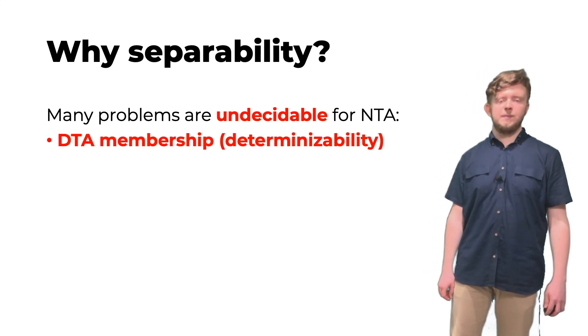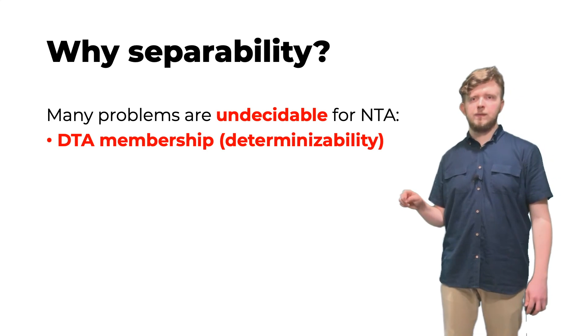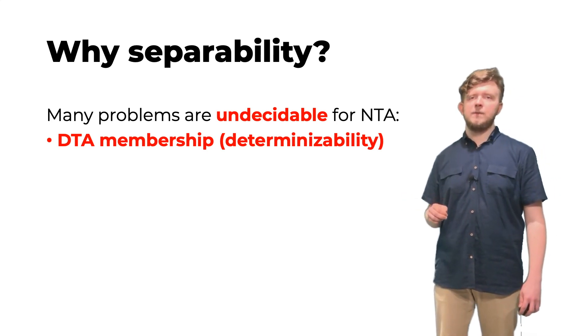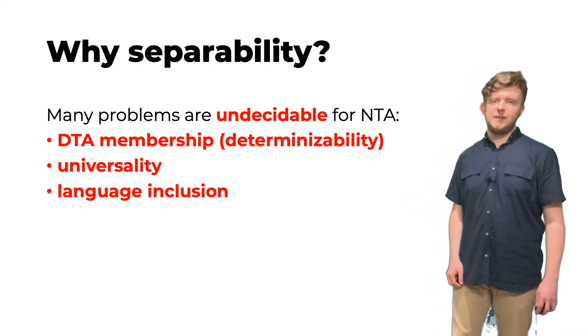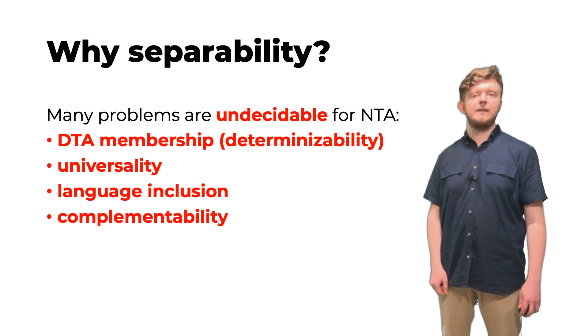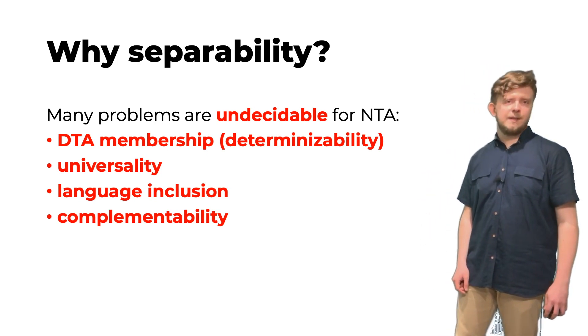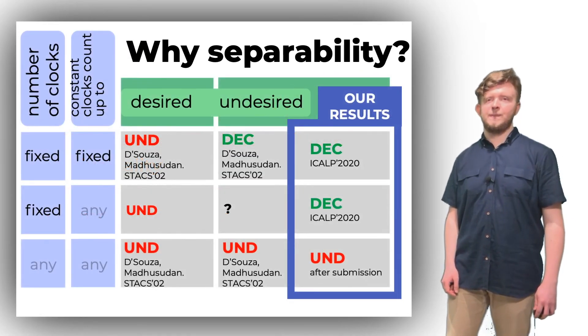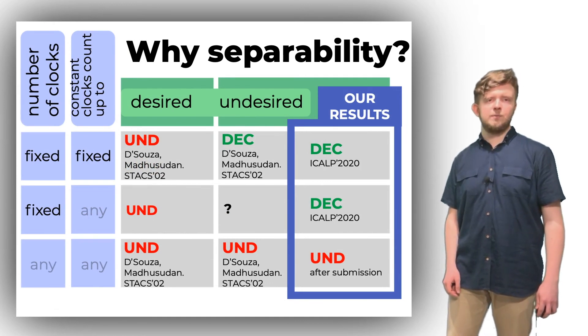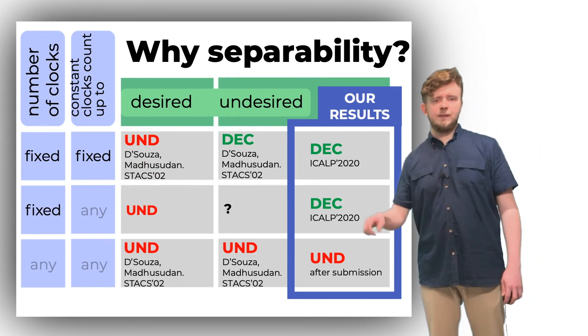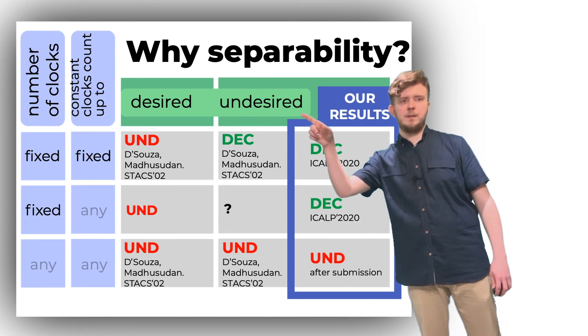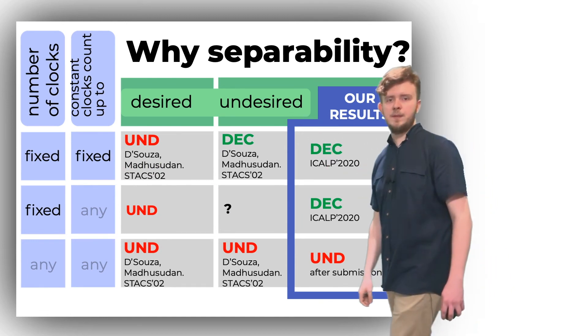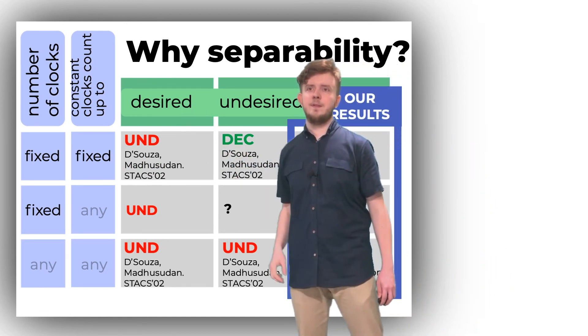You may wonder why we think the separability is interesting. One of the reasons is simply the fact that it is decidable. Many other problems for timed automata are not. In particular, a related problem of DTA membership is undecidable. The other results include universality, complementability and language inclusion. In fact, we've been very lucky that the games that we solved separability with turned out to be using this variant of the winning condition. If they used the other one here, we couldn't even decide them.